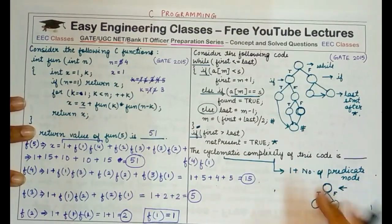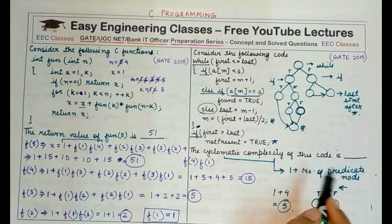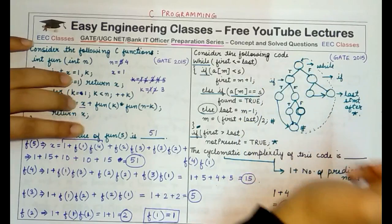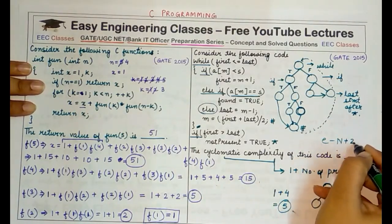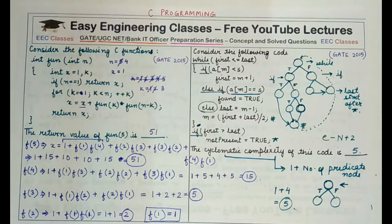There are four predicate nodes, so the cyclomatic complexity is 1 plus 4 equals 5. You can also complete the control flow graph fully: total edges come out to 13, total nodes to 10, and applying the formula E minus N plus 2 gives 13 minus 10 plus 2 equals 5 — the same answer. For exams like GATE and UGC NET, counting predicate nodes is the quicker approach.